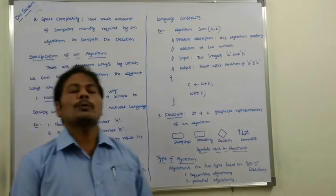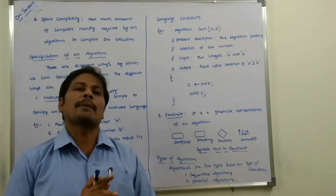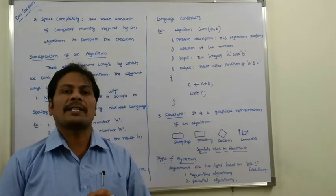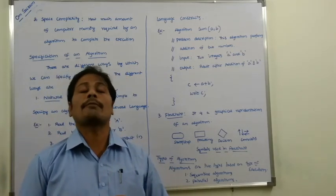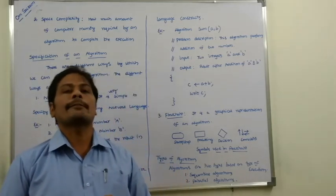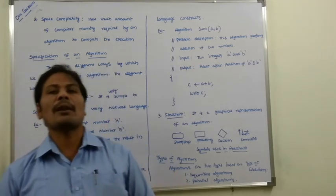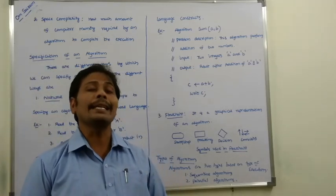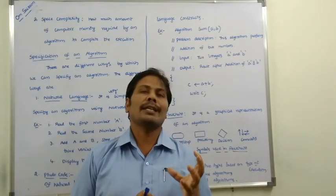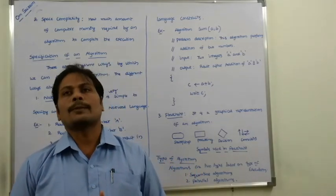An algorithm can be specified in different ways. Some of the algorithm specifications are: natural language — using simple English language sentences; pseudocode — a mixture of natural language and programming language constructs; and flowchart — a graphical representation. By using natural language, we can easily specify an algorithm using simple English sentences.